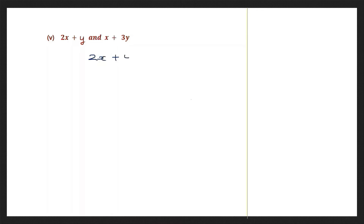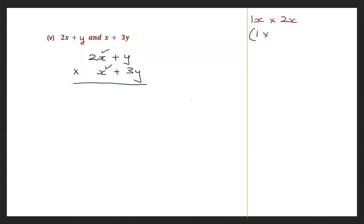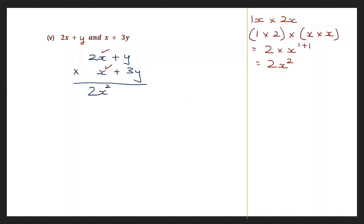Question 5: 2x plus y into x plus 3y. First we're going to multiply x into 2x. The numbers will be 1 into 2 and x into x — 1 two is 2 into x to the power of 1 plus 1, which is 2x squared. So we have 2x squared. Now we finish with x into 2x. We'll do x into y — x into y is simply xy.